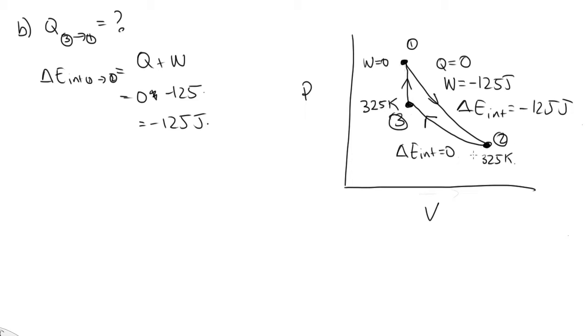Now there's no change in internal energy here. And around the cycle, the total change must be 0. So the change in internal energy going from 3 to 1 must be equal to 125 joules.